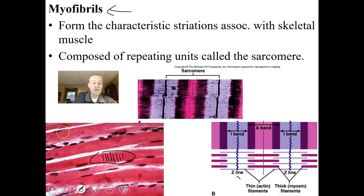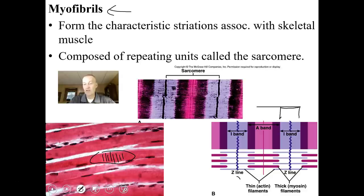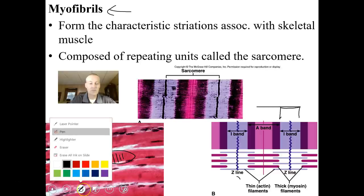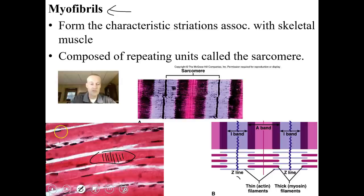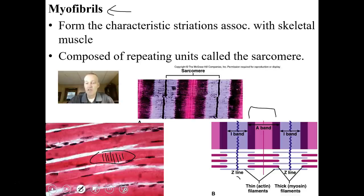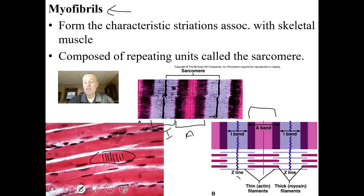Because of the overlap of the thick and thin filaments, different bands form. The I-band is where you only have thin filaments. The A-band is where you have the thick filaments and possibly some overlap with the thin filaments — it's a darker band. In the electron micrograph you can see the darker A-band and the lighter I-band. It's important to learn the I-bands, A-bands, Z-lines, and M-lines because during a muscle contraction certain bands will actually disappear.